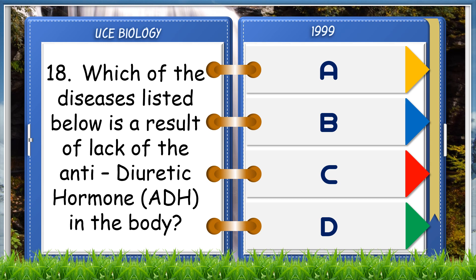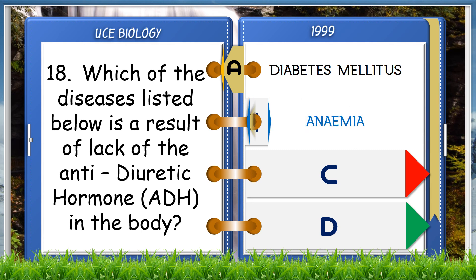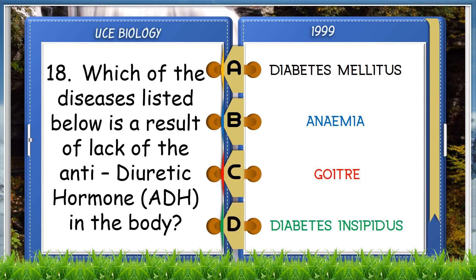Which of the diseases listed below is a result of lack of antidiuretic hormone (ADH) in the body? A. Diabetes mellitus, B. Anaemia, C. Goitre, D. Diabetes insipidus.